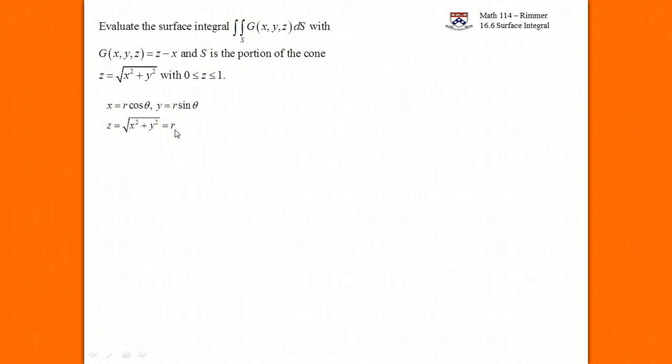We have to figure out what happens with r and theta, like what are the bounds. Once we get the bounds for r and theta, we're going to plug into this formula. We go back to the original function to replace the z minus x with the r and theta version of that. We have to find the partials r_r and r_theta, take a cross product and take a magnitude, then we'll be able to calculate the integral.